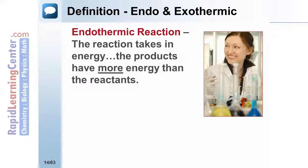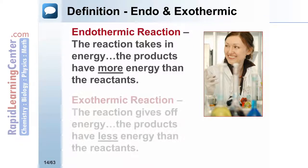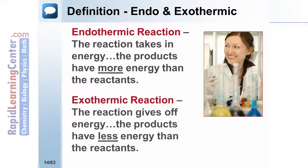Endothermic and exothermic are terms that refer to the overall energy change of a process. Endothermic means the process takes in energy. The products have more energy than the reactants. Exothermic means the reaction gives off energy. The products have less energy than the reactants.